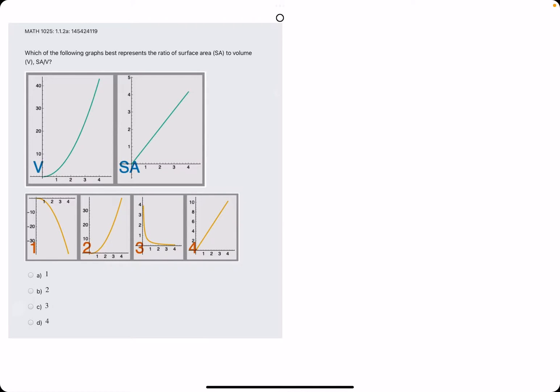Okie dokie. In this problem, they give us a graph for the volume and a separate graph for the surface area, and then they're asking which of the following graphs here best represents the ratio of surface area to volume, SA over V. So SA divided by V, essentially.